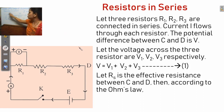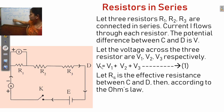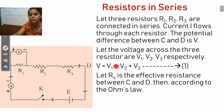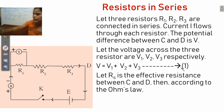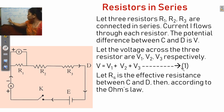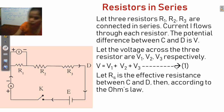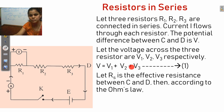Throughout the circuit, consider the total potential difference to be V. Then we can write V equals V1 plus V2 plus V3. This is Equation 1. If the number of resistors are connected in series, the current through each resistor is the same, but the potential differences are different. V1, V2, and V3 are the potential differences across R1, R2, and R3 respectively.